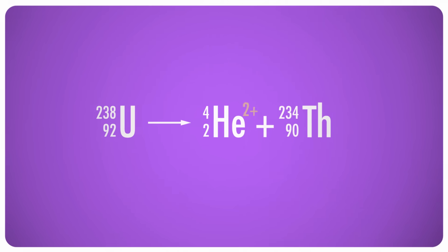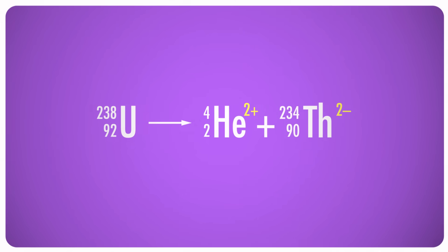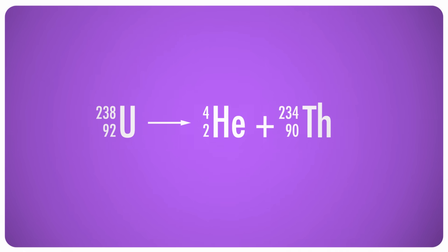The helium nucleus obviously has a plus 2 charge, and the thorium atom would have a negative charge as well. While it's not incorrect to write them, these charges are often omitted to emphasize what's going on in the nucleus.